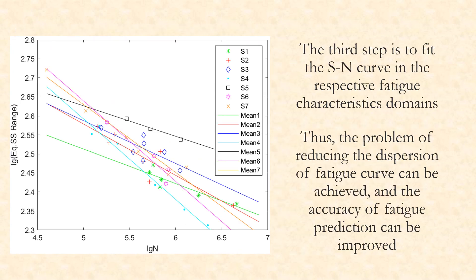The third step is to fit the S-N curve in the respective fatigue characteristics domains. Thus, the problem of reducing the dispersion of fatigue curve can be achieved and the accuracy of fatigue prediction can be improved.